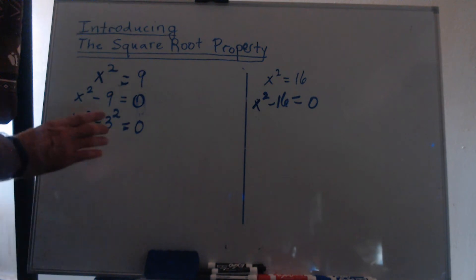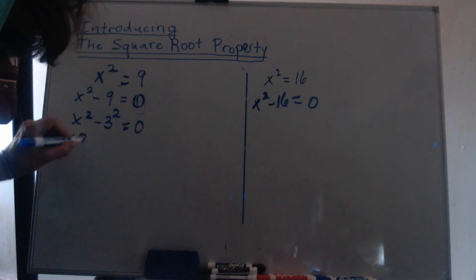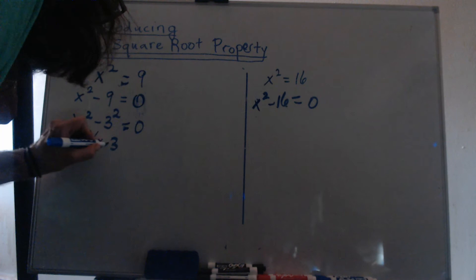On this one, we would get the quantity x plus 3 times the quantity x minus 3, and that's equal to zero.